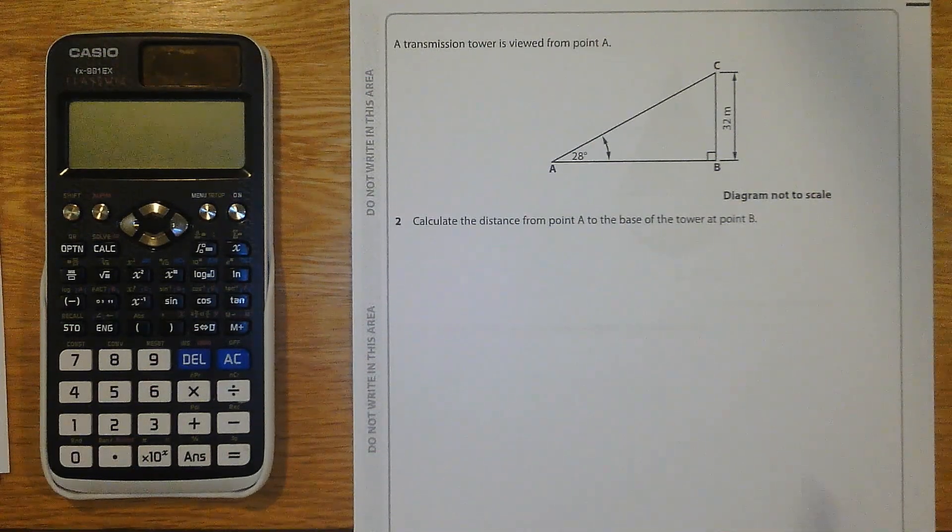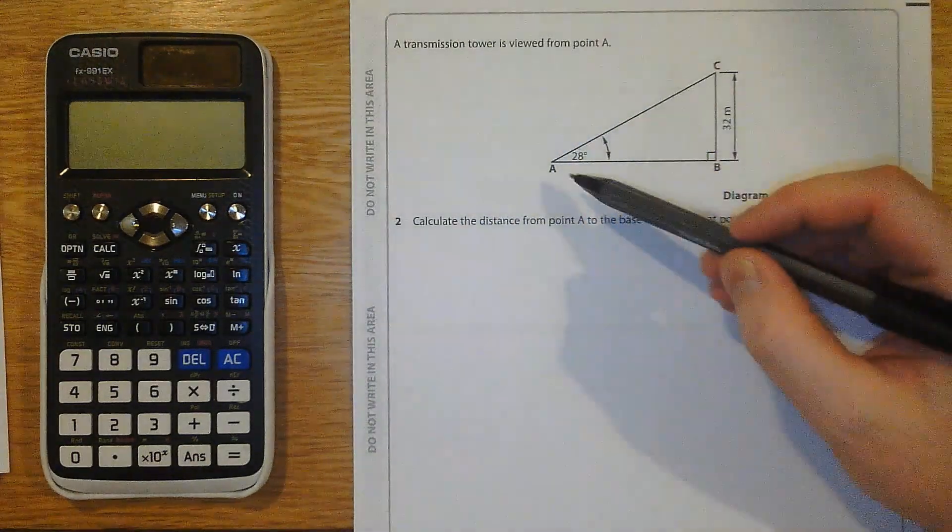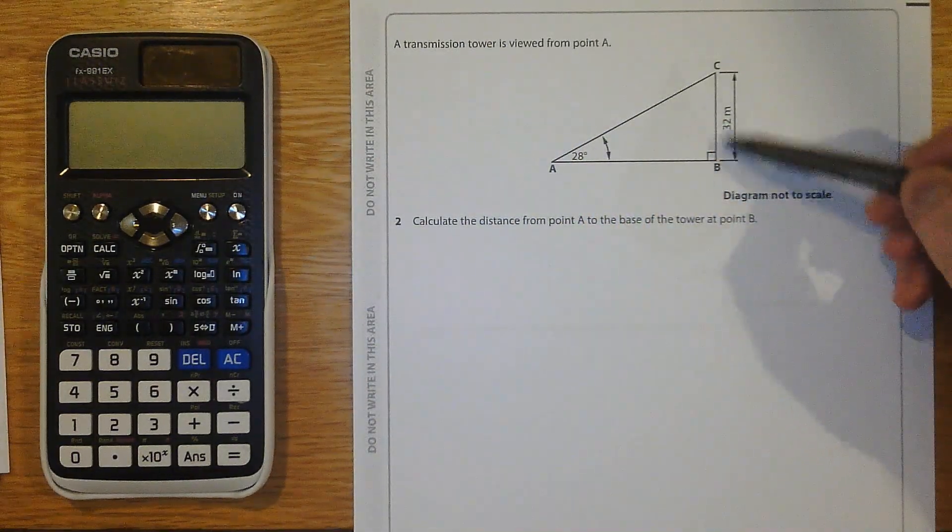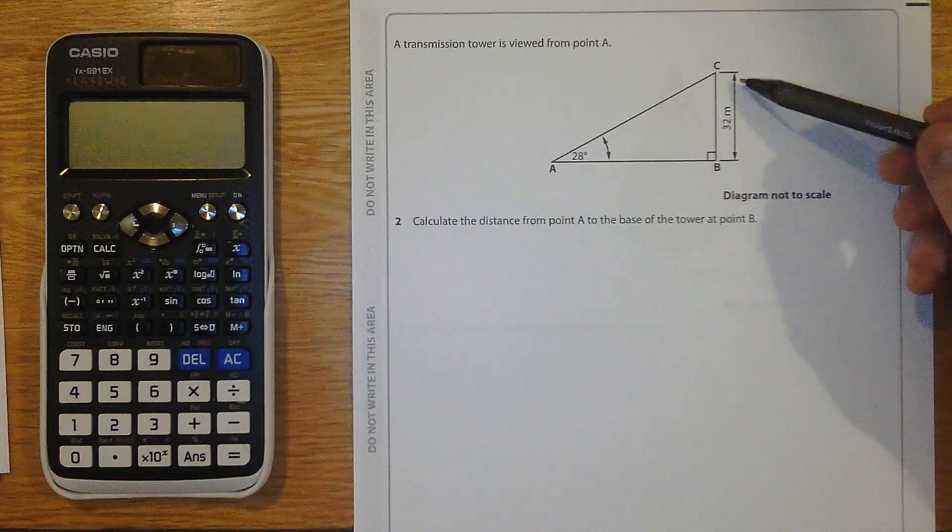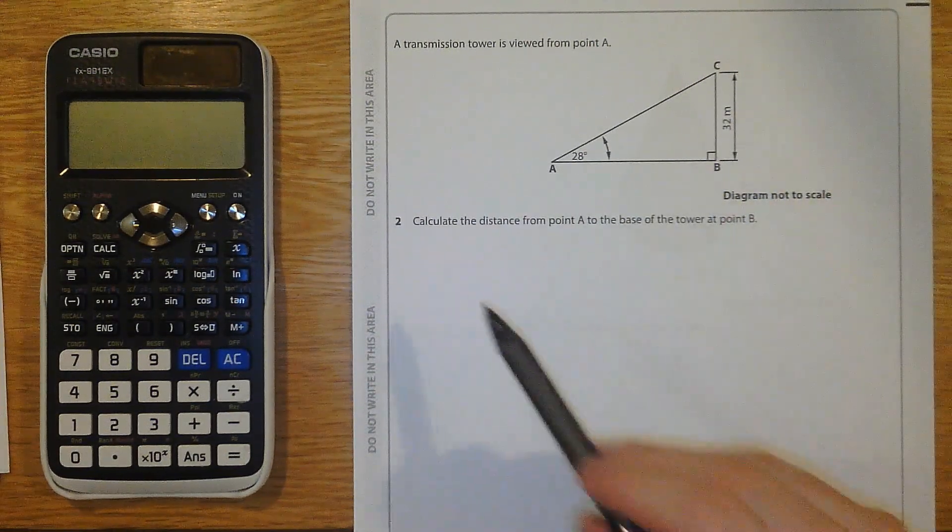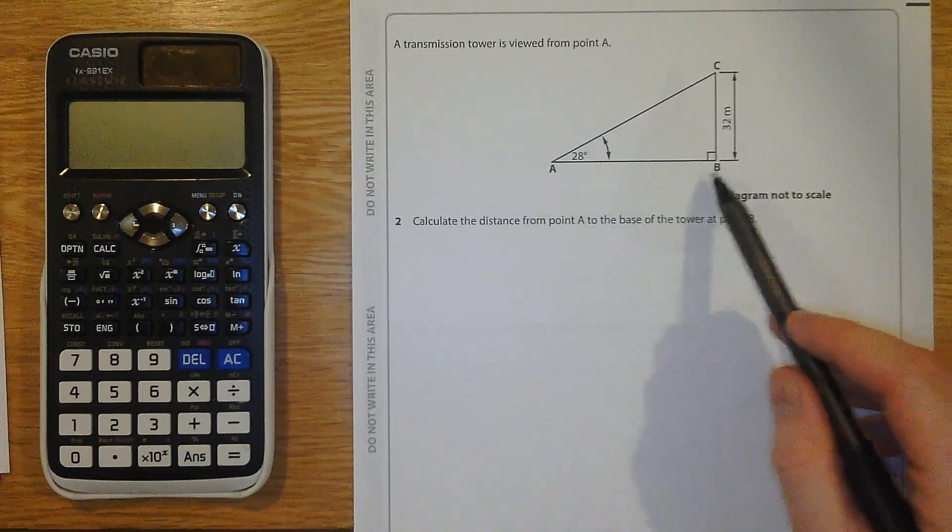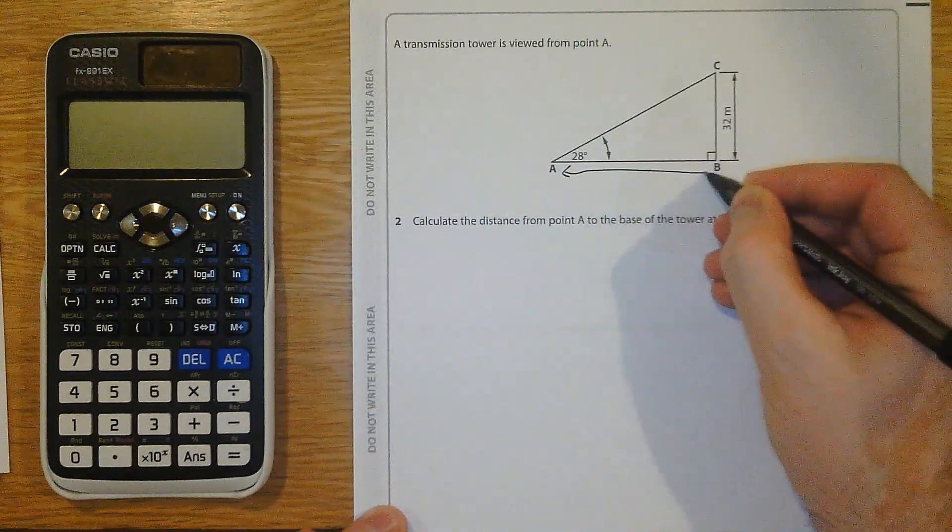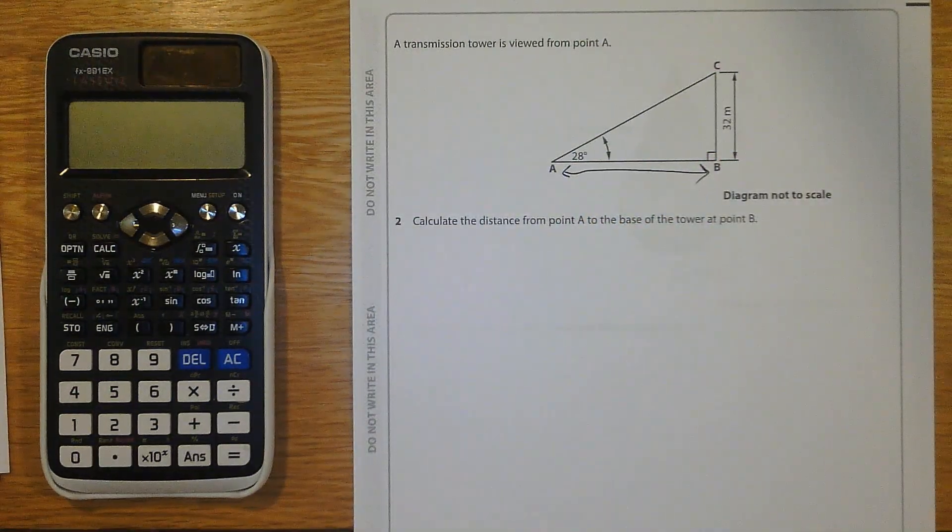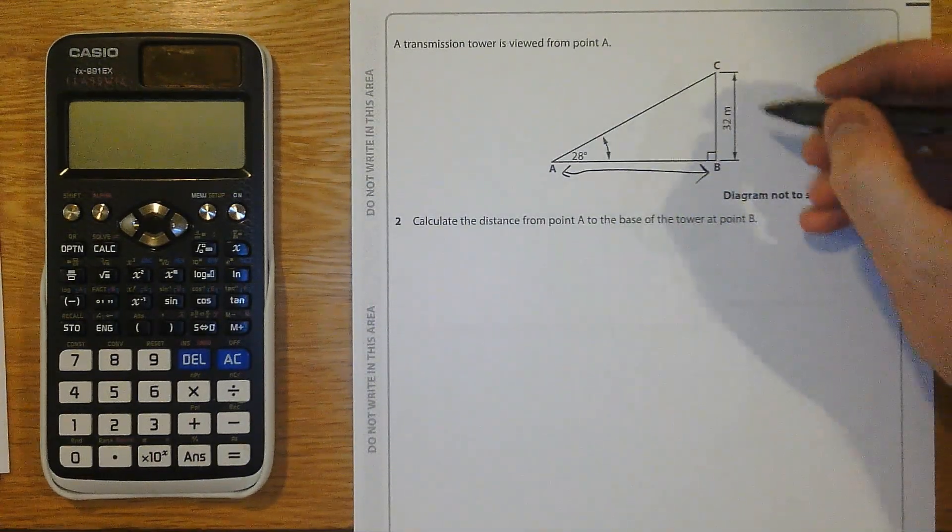Question 2. A transmission tower is viewed from point A. So here's point A. This must be the transmission tower. Transmission tower must be 32 metres tall. Calculate the distance from point A to the base of the tower at point B. That's what I'm after. There's a right angle, so it's a right angle triangle, it's SOHCAHTOA.